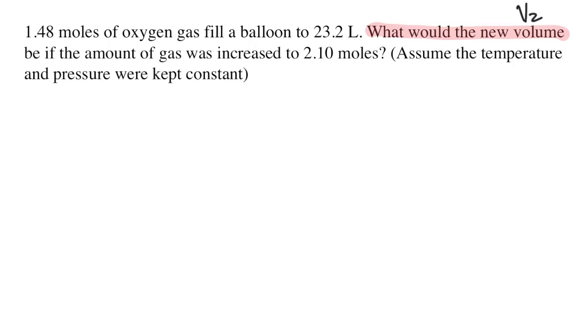Next, I'm going to use green to highlight the given information. The starting conditions are given first. There are 1.48 moles of oxygen gas. That's N1, with an initial volume of 23.2 liters. I'll label that V1. Remember that the ones are the starting or the initial conditions. Then something changes. In this case, the amount of gas changes to 2.10 moles. So I'm going to label that N2.